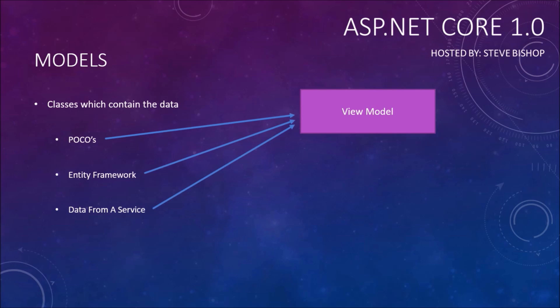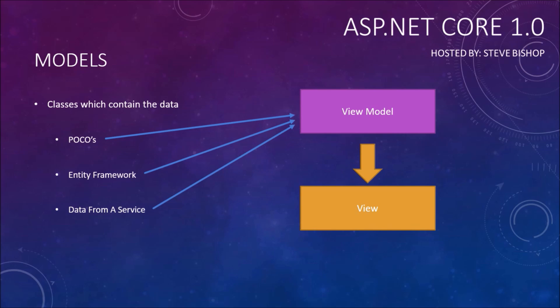Your POCOs, your Entity Framework classes, and your data from a service — you're going to collect these classes and put them into a view model class, and then pass that view model class into the view. You don't want to directly push your POCOs, Entity Framework classes, or service data right into your view. You really want to put them into a view model container and then pass that view model to the view.